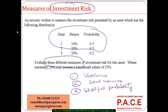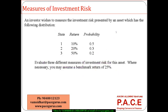In this kind of situation, we are asked to evaluate three different measures of investment risk. Wherever necessary, we assume a benchmark return of 25. For computing the shortfall probability, we require the benchmark. But for computing the variance, I require the mean return — our expected return — which comes out as the weighted average of these three as a summation.